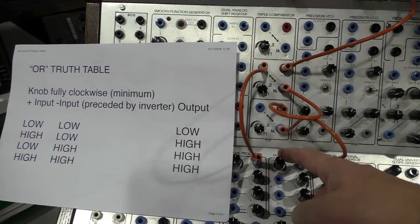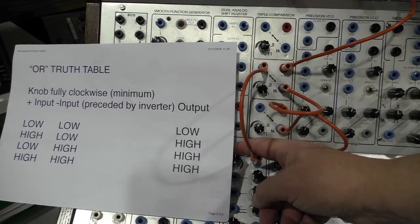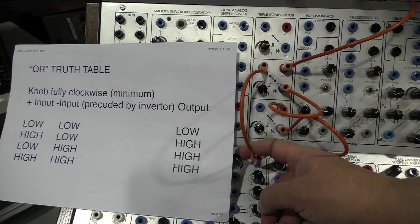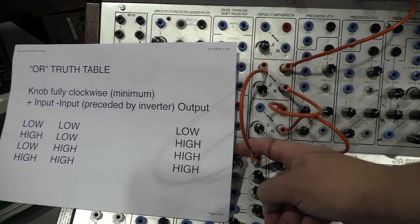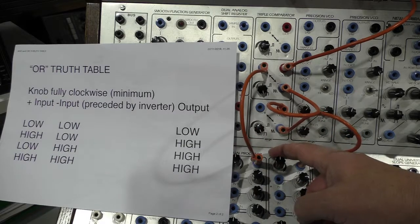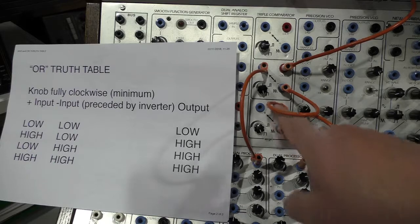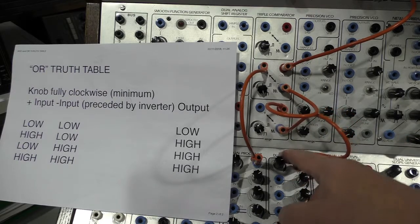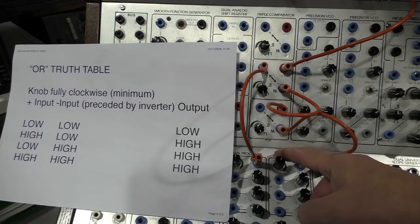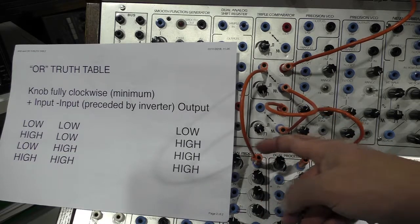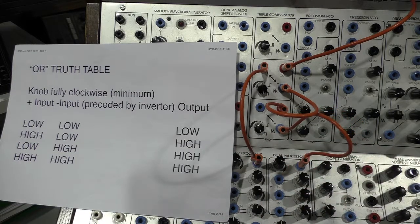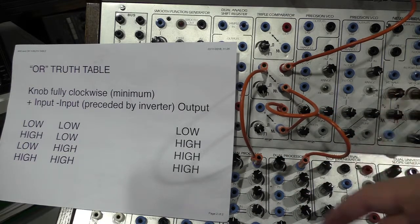Low and low produce low. High on the left, that's to say the positive input, produces a high. High on the right, going through the inverter, produces a high on the output. And a high and a high together produce a high. So now we've created the OR gate.